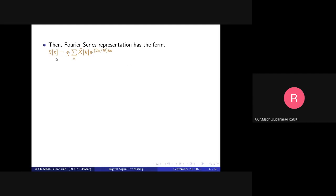The Fourier series representation has the form: x̃(n) = (1/N) · Σ_k X̃(k) · e^(j·2π·k·n/N). The period of each harmonic is capital N, and the signal on the left side is also periodic with period capital N — both periods match.